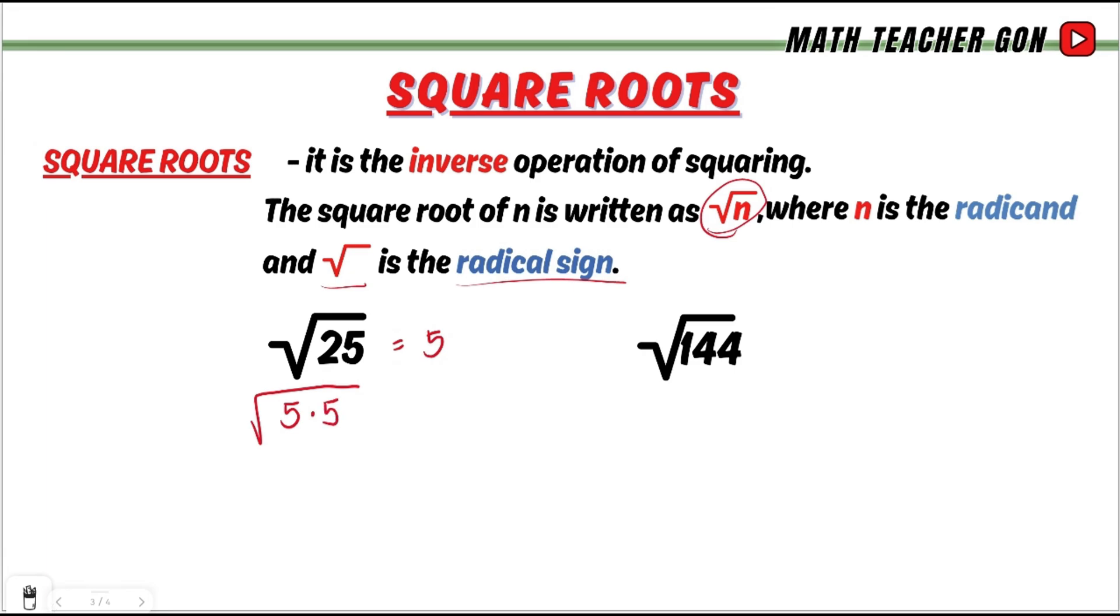Next, square root of 144 is 12. Why? Simply because 144 is 12 times 12.